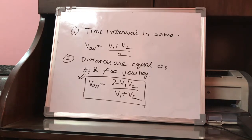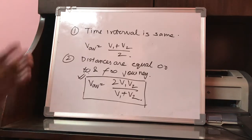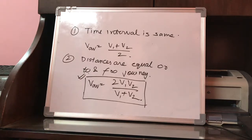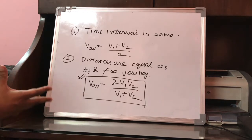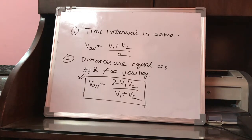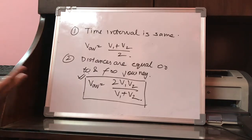This formula can be used as a shortcut for solving numericals on average speed. However, in school examinations you should follow all the steps unless your teacher allows the direct formula. If you are appearing in a state-level, national-level, or international-level physics olympiad, you can directly use v_average equals 2v1v2 upon v1 plus v2.